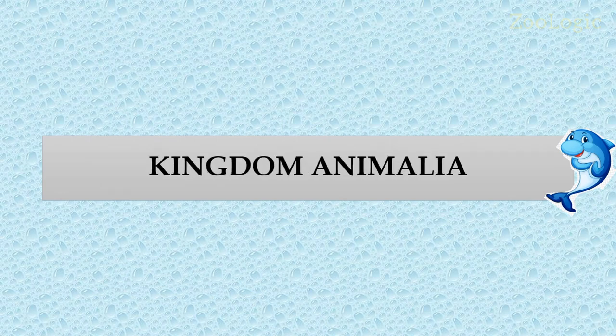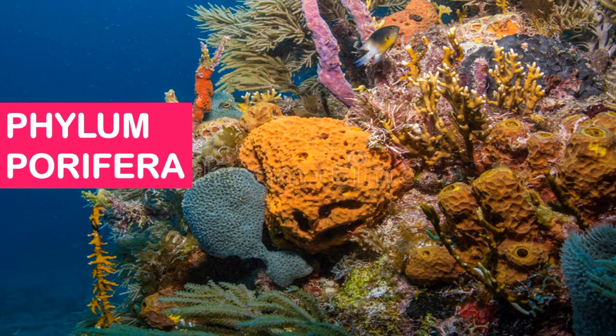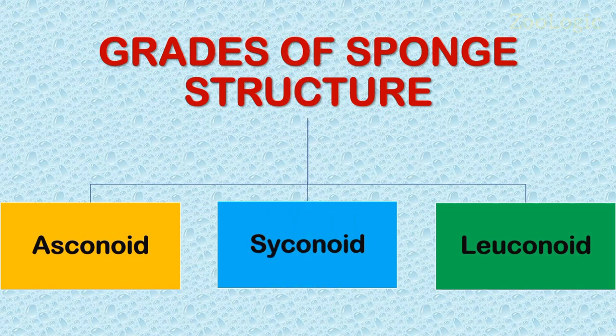Assalamu alaikum and welcome back. This video is all about the grades of sponge structure. As we are familiar, the structure of sponge is built around a water canal system, also known as the aquiferous system, which constitutes incurrent pores, excurrent pores, water canals, and chambers. The physiology of sponges is dependent upon the flow of water through the body. There are three types of sponges: asconoid, syconoid, and leuconoid.